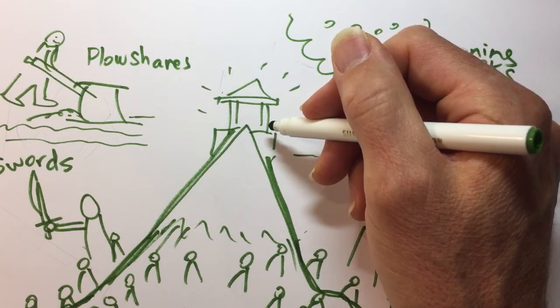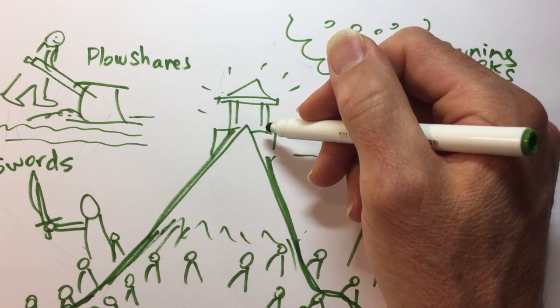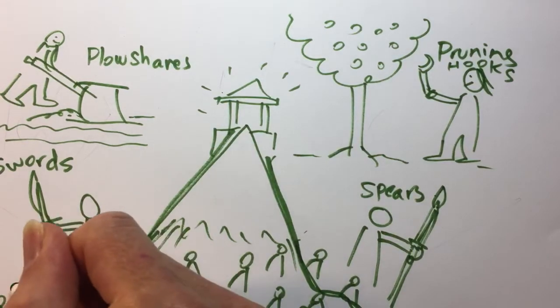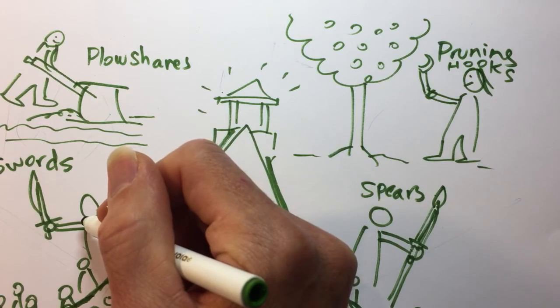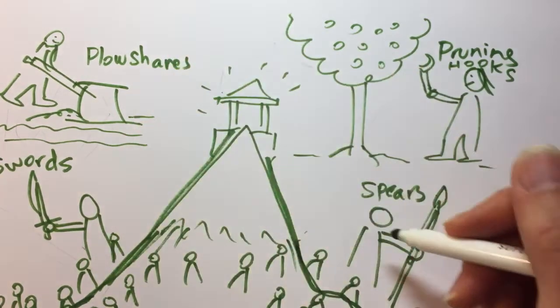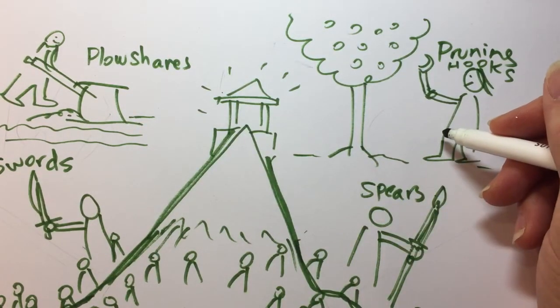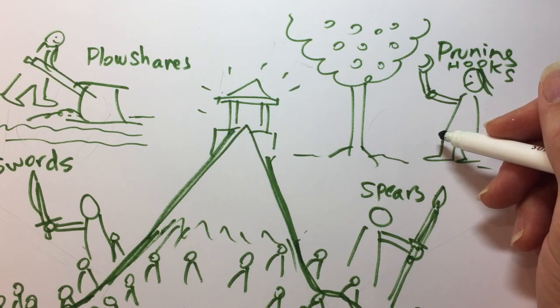The Lord's teachings will go out from Jerusalem and the Lord will settle arguments among many nations. Look at all these people arguing from all these nations. It says the Lord will settle the arguments. He will make decisions for strong nations that are far away. And the nations will make their swords into plows and plowshares. And they'll make their spears into hooks for trimming trees. Nations will no longer fight other nations. They will not even train for war anymore.